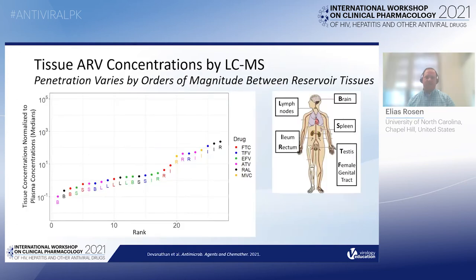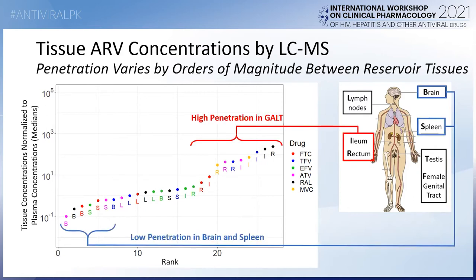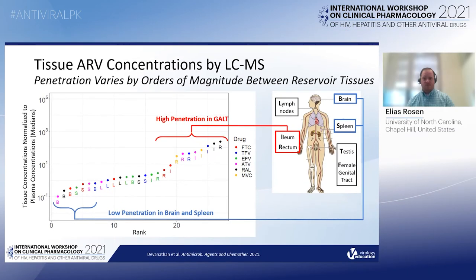As part of a recent study, we used LC-MS-MS to measure six antiretrovirals across multiple tissues — ranging from the brain, spleen, genital tract, GALT tissue, and lymph nodes — to measure penetration ratios relating tissue concentrations to plasma concentrations, organized here in rank order, showing a range of almost four orders of magnitude, where penetration is highest in ilium and rectum and lowest in brain and spleen in humans.